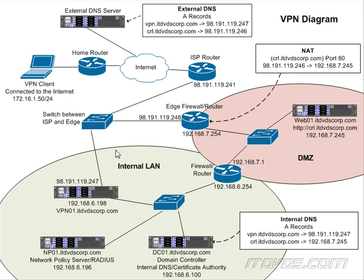Now, if we don't want that to happen, we can configure what's called split tunneling. Split tunneling means only traffic that's destined for the subnets on our internal LAN will go through the VPN tunnel. Other traffic, like if this client is trying to access google.com or some other website out there on the internet, it will use its normal internet connection to do that.